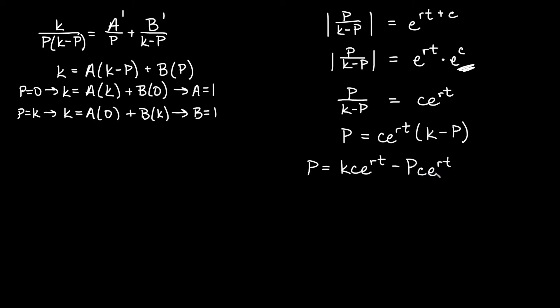And then from here, let's go ahead and get our P terms on one side. So I'll move this term over, add it to the other side. That would become P plus Pc e to the rt equals kc e to the rt. We're getting tongue twister-ish here. And now to solve for P, I can factor out my P. So it'll be P times the quantity one plus c e to the rt equals kc e to the rt.